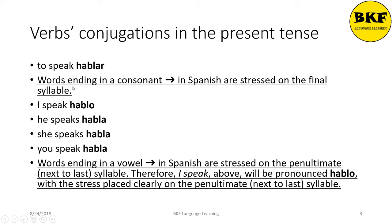Let's start with verb conjugations in the present tense. 'To speak' is hablar. Words ending in a consonant in Spanish are stressed on the final syllable, so in the word hablar the stress falls on the last syllable. 'I speak' is hablo, 'he speaks' is habla, and so is 'she speaks' and 'you speak' (formal).